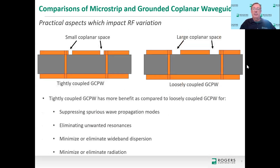There are two main types I'm showing: a tightly coupled and a loosely coupled Grounded Coplanar Waveguide. Tightly coupled has a very small gap between the coplanar ground-signal-ground on the top copper layer; loosely coupled has a larger space. In theory, tightly coupled GCPW will be better at suppressing spurious wave modes, eliminating unwanted resonances, minimizing wide band dispersion, and minimizing or eliminating radiation. So in general, tightly coupled Grounded Coplanar Waveguide has much more benefits than loosely coupled. If the loosely coupled is extremely loosely coupled, it becomes MSL — microstrip-like — and at that point it may have the GCPW structure but it's really behaving as a MicroStrip.